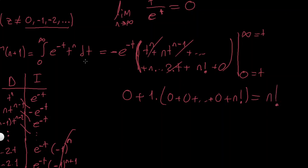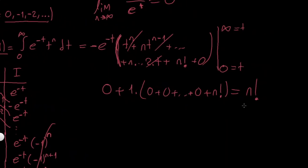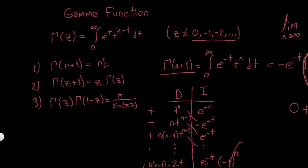And we are done. I started with gamma(n+1), evaluated it, and found n factorial. This proves the first property. Note this is only true for integers, because we can only define factorial for integers — so it doesn't quite make sense to say gamma(z+1) = z! in general; we can only use this property for integers.